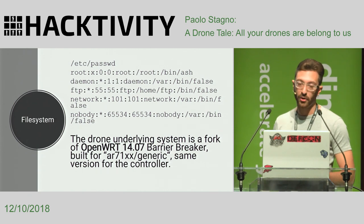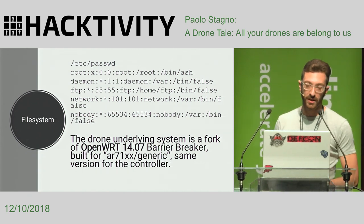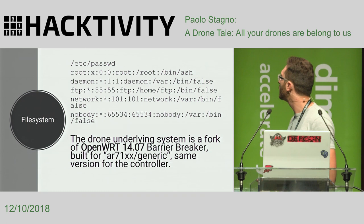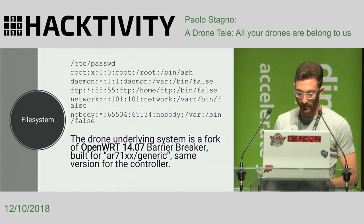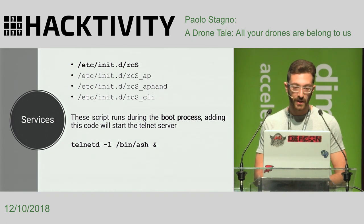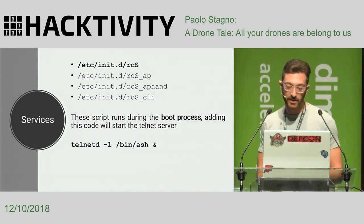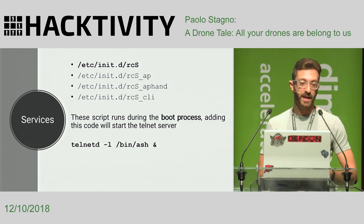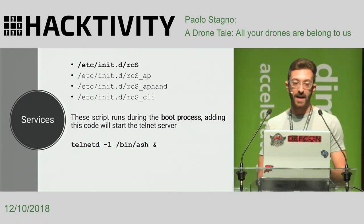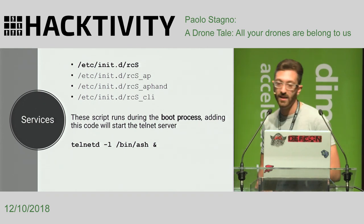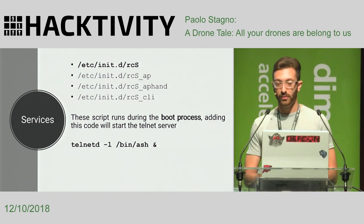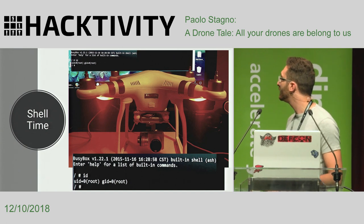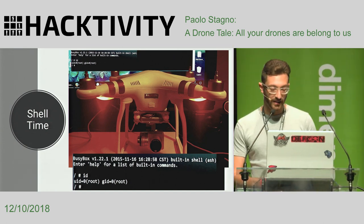From the file system, I found that DJI is using a fork of OpenWrt version 14.07, called the Barrier Breaker, full of custom DJI binaries. I found scripts running at boot time holding information about network connection and network settings. By adding the command telnet -l /bin/sh and so on, I was able to reactivate the Telnet service and connect. I was finally root.